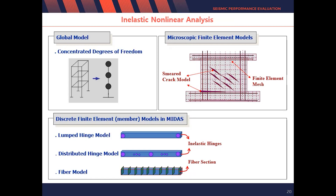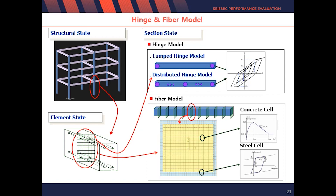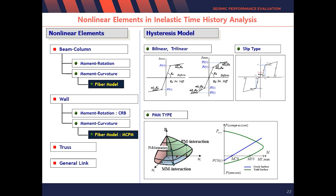When engineers perform non-linear analysis, they have to model according to properties per element. MidasGen supports both hinge and fiber models. In the hinge model, there are two types: lumped and distributed hinges. For the fiber model, engineers define properties depending on material properties for RC and steel. Engineers also use beam, column, wall, truss, and general link elements for non-linear analysis, and for the hysteresis model, there are also various types.